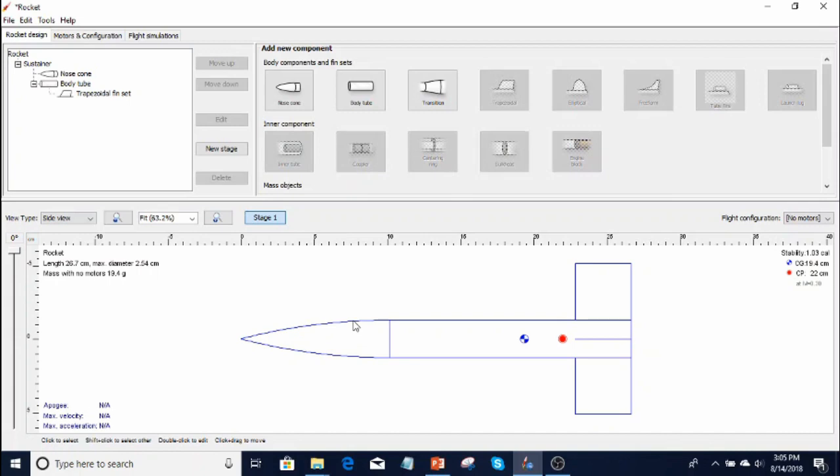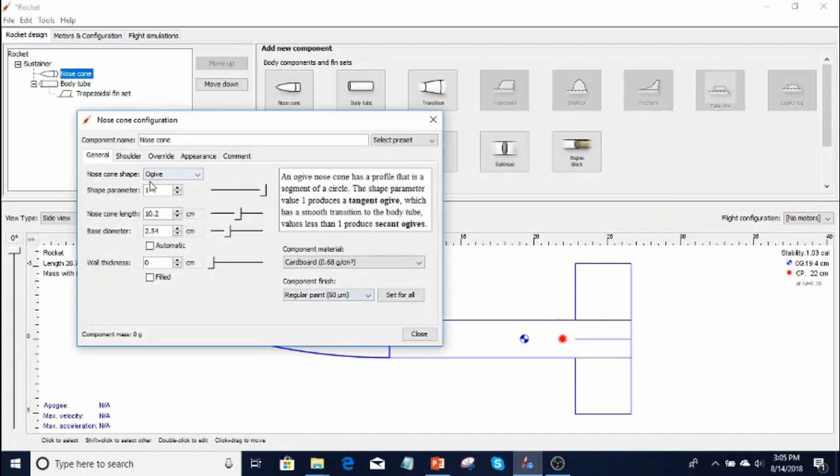The nose cone is an ogive shape. It's got a length of 10.2 centimeters and a base diameter of 2.54 centimeters.